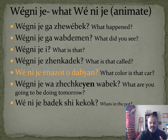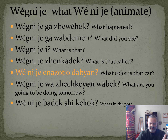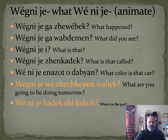Here's an example of an animate one: when using wen nije with a dabian. 'What color is that car?' uses wen nije and i know sat or dabian — because car is animate, you use wen nije instead of wek nije.